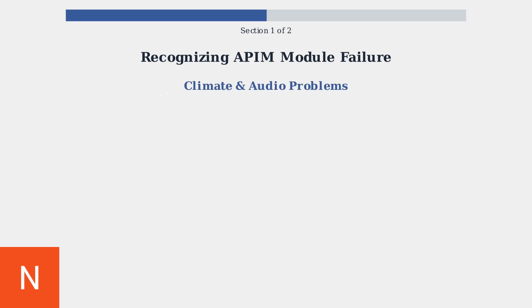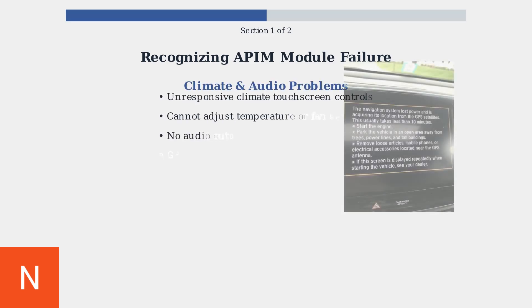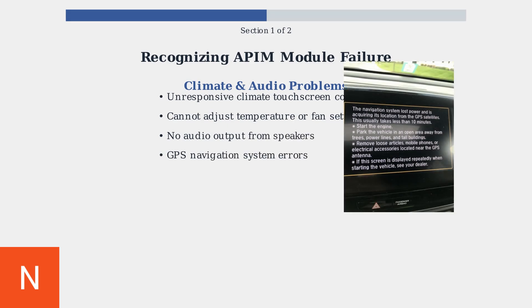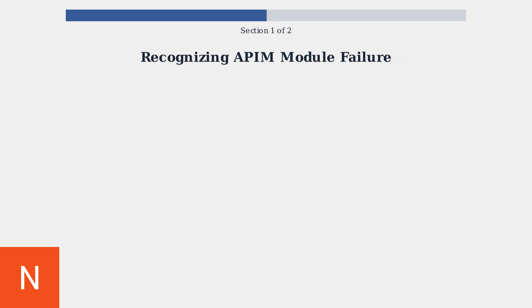APIM failure can also affect climate controls and audio systems. You might find touchscreen climate controls become unresponsive, temperature adjustments don't work, audio stops playing, or GPS navigation shows errors.